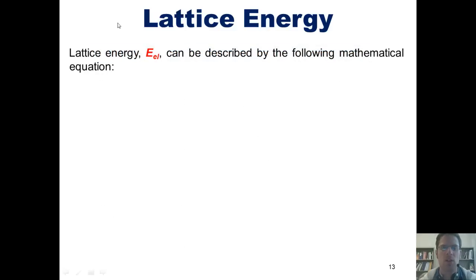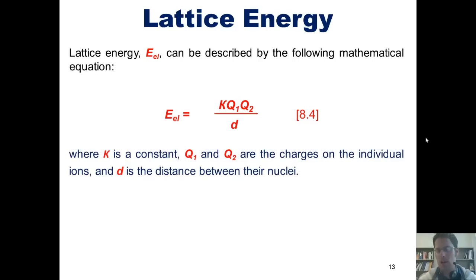Lattice energy, which is also called in our book E_EL, can be described using the following mathematical equation: E_EL = κQ₁Q₂/d, where κ is some constant, and Q₁ and Q₂ are the individual charges of the individual ions, the cation and the anion, and d is the distance between their nuclei.